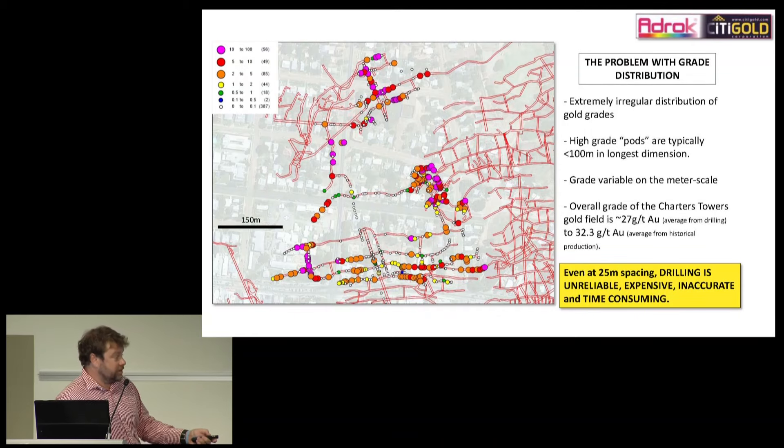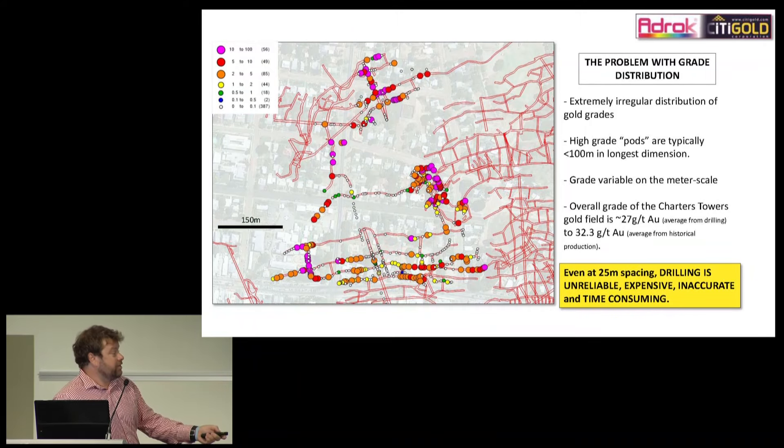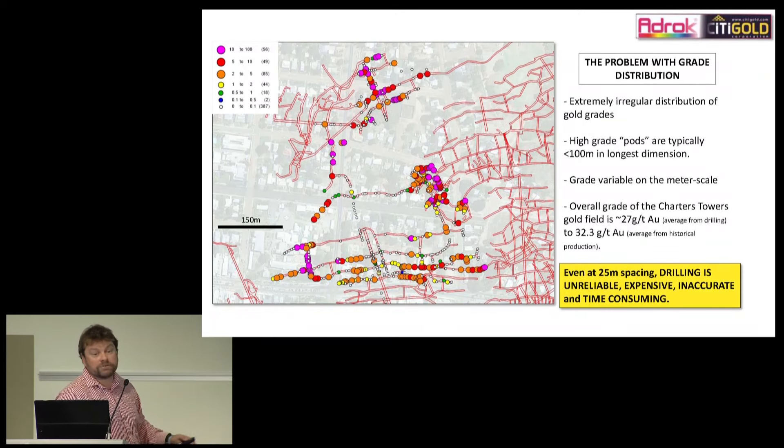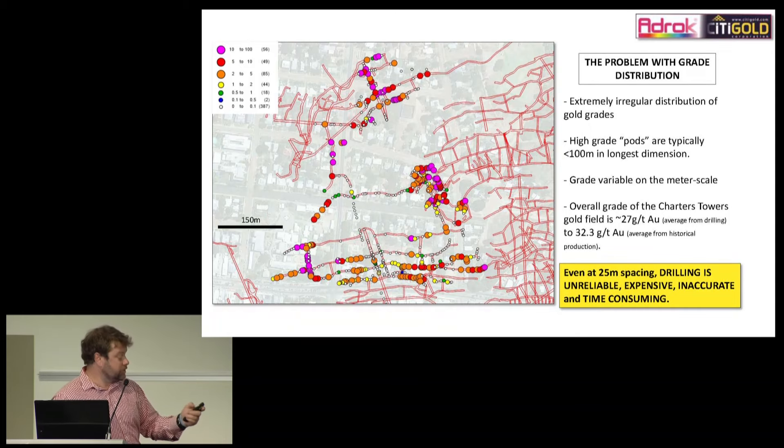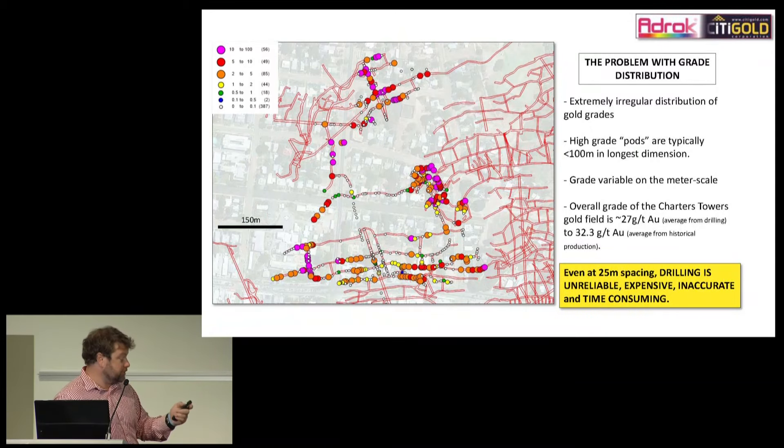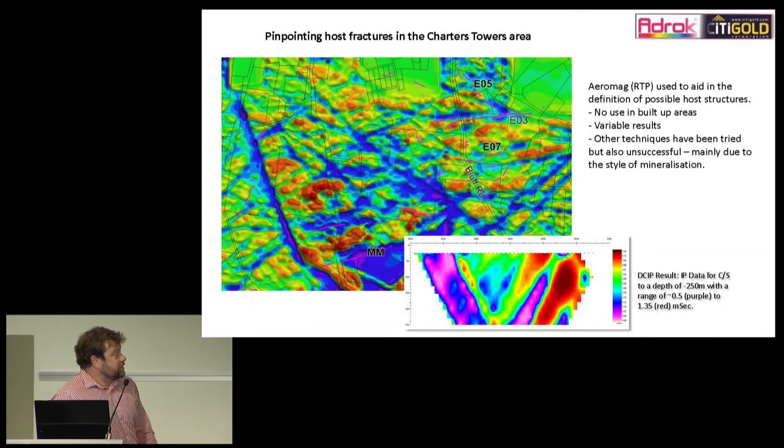We needed a method to work out where to put drill holes and where to go and chase in terms of underground. Even at 25 meter spacing, drilling is unreliable. It's extremely expensive. You're drilling 600 meters for a one meter intercept. It's pretty demoralizing sometimes. It's inaccurate because we just don't know where we're going to end up. It doesn't matter how much structural geology you do on this, it's quite difficult to predict targets. And it's extremely time consuming because we're drilling through granite, we're talking about 30 meters a day. You can see just how time consuming this drilling actually becomes.